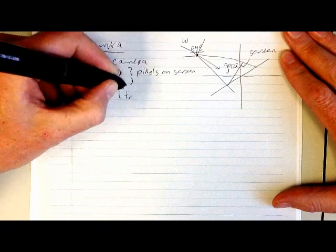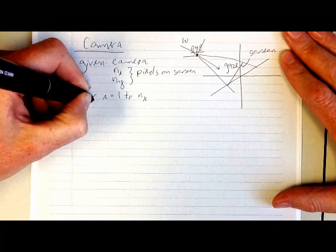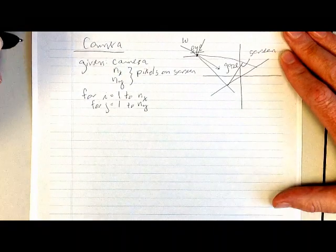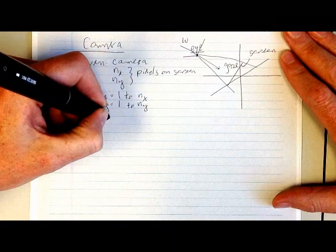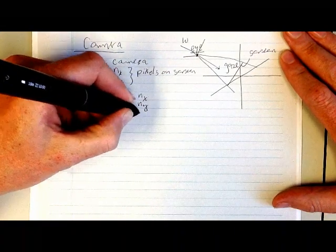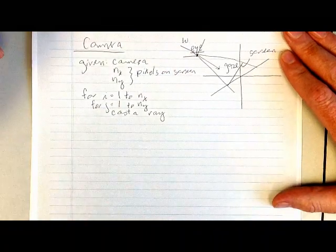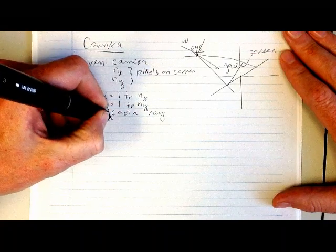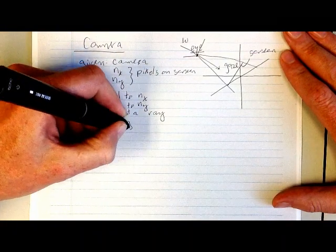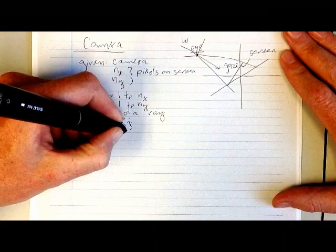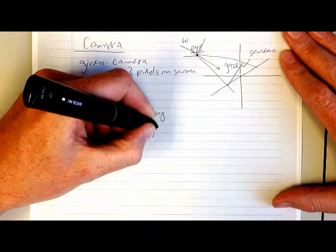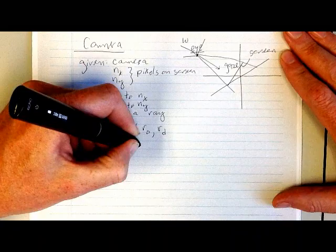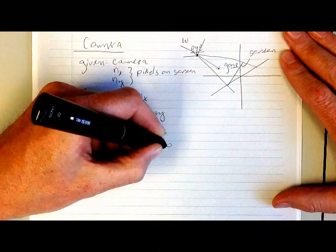So typically you'd be given the camera and nx and ny, which is the number of pixels in the x and the number of pixels in y on the screen. So that's the number of pixels on the screen. And what we're going to do is write a pair of for loops for i equals 1 to nx and for j equals 1 to ny.